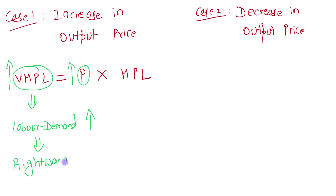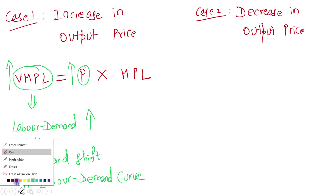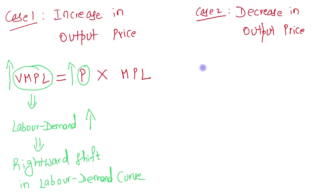This increase in labor demand leads to a rightward shift in the labor demand curve. That was Case 1. Now let's look at Case 2. Again, VMPL equals output price times the marginal product of labor.